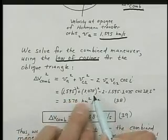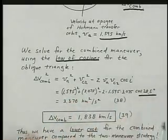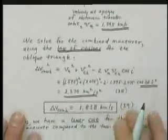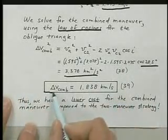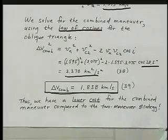Plugging in numbers, 1.595 kilometers per second and 3.075 kilometers per second and cosine of 28.5, we get this value for the squared value. And taking the square root, we have a delta V combined of 1.838 kilometers per second.